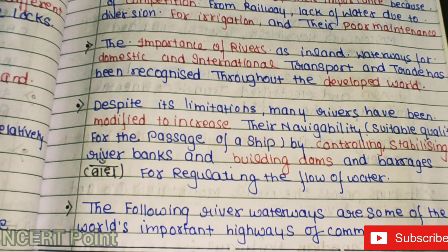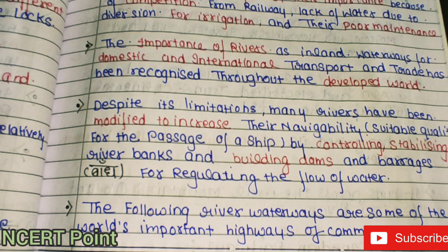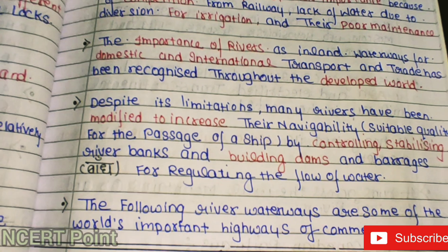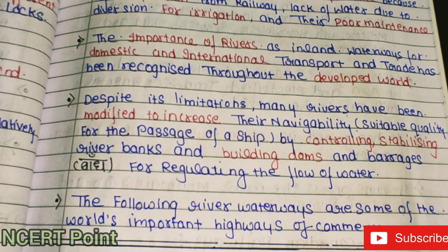Despite limitations, many rivers have been modified to increase their navigability by controlling and stabilizing river banks, and building dams and barriers for regulating water flow. Developed nations have made these investments to ensure smooth trade and passenger movement. These river waterways are among the world's most important highways of commerce, and countries develop inland waterways to move large quantities of goods to their ports.